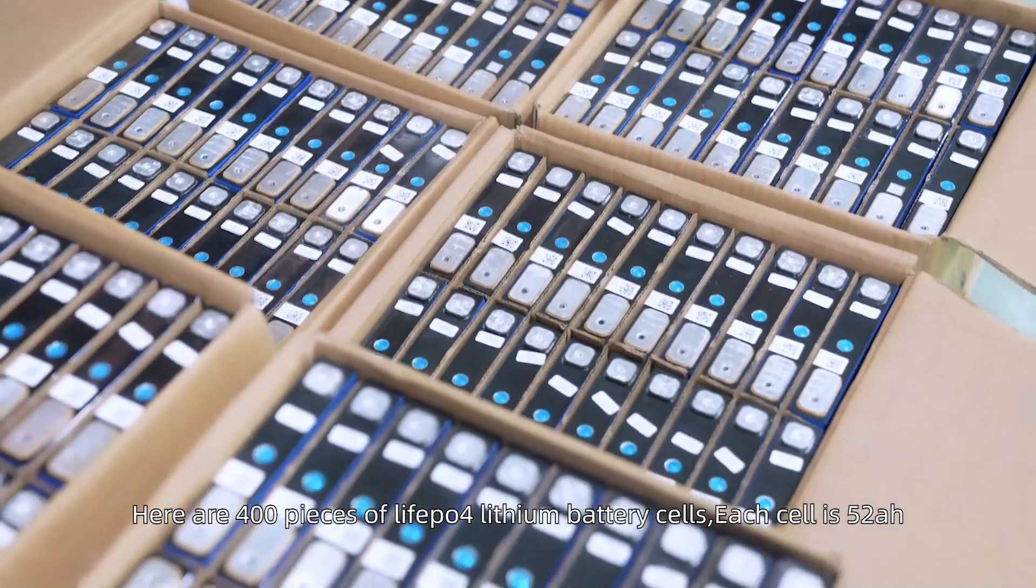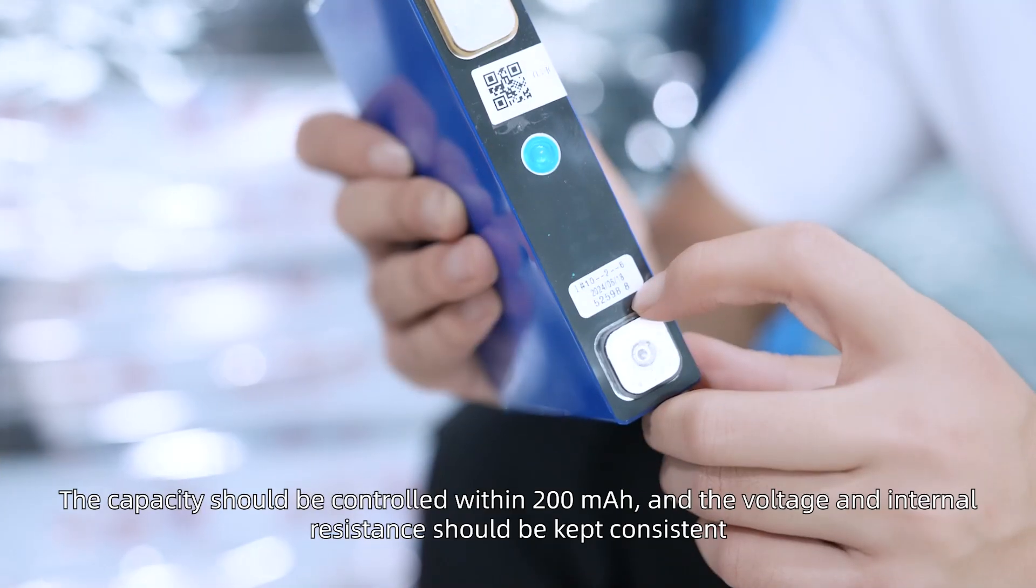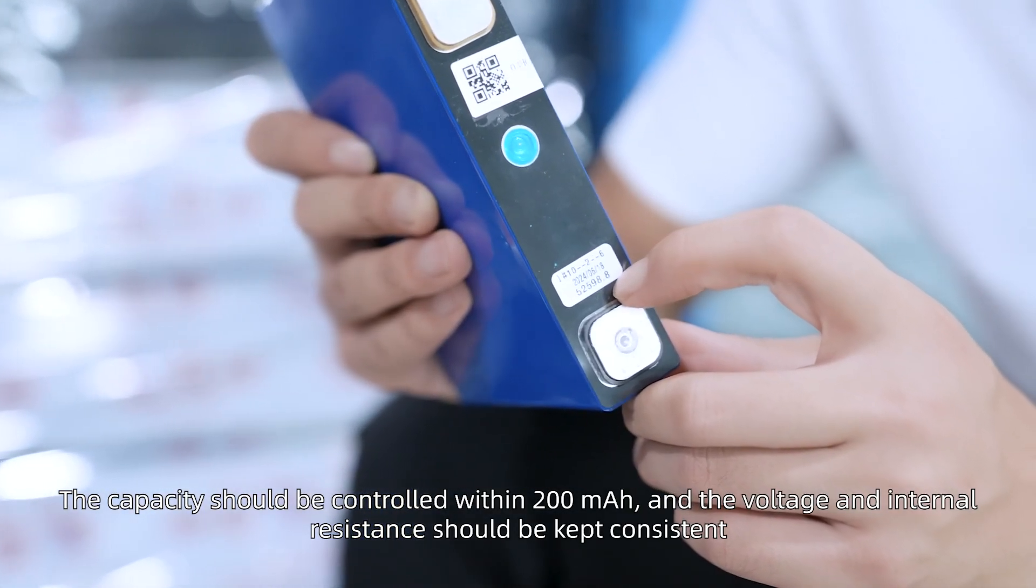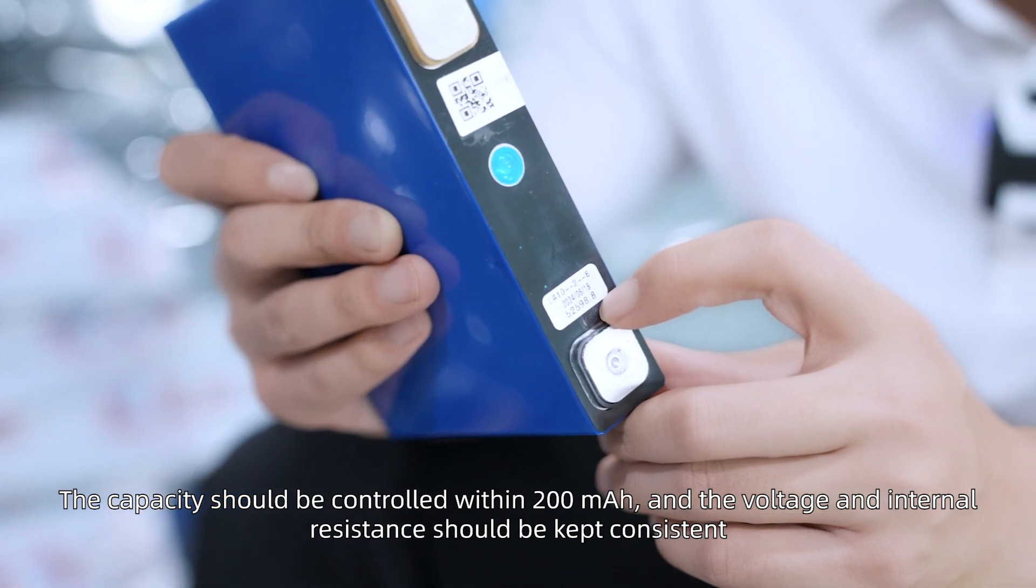Here are 400 pieces of LiFePO4 lithium battery cells. Each cell is 52Ah. The capacity should be controlled within 200mAh and voltage and internal resistance should be kept consistent.